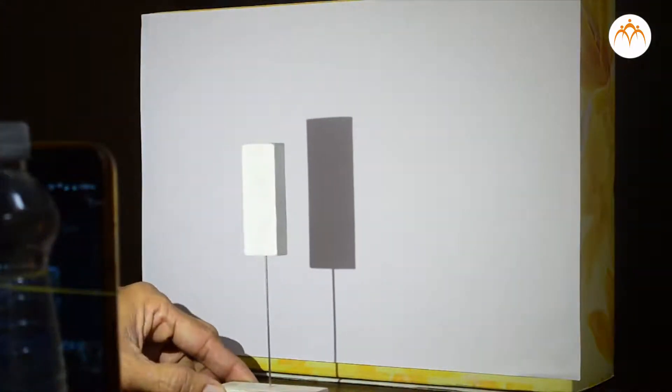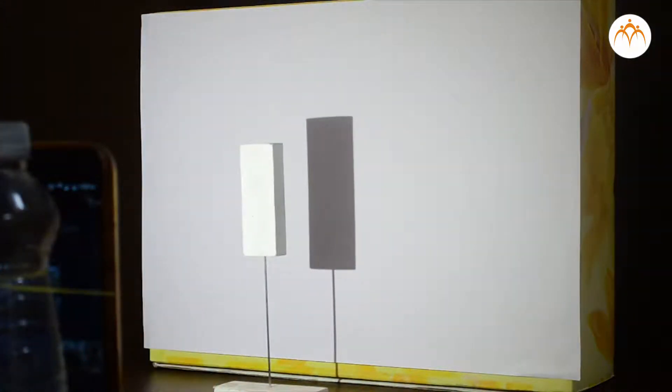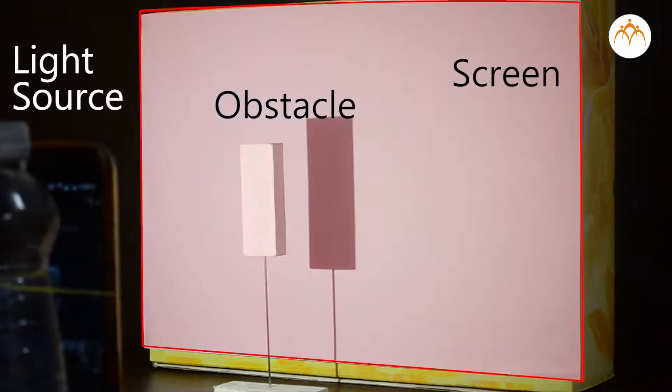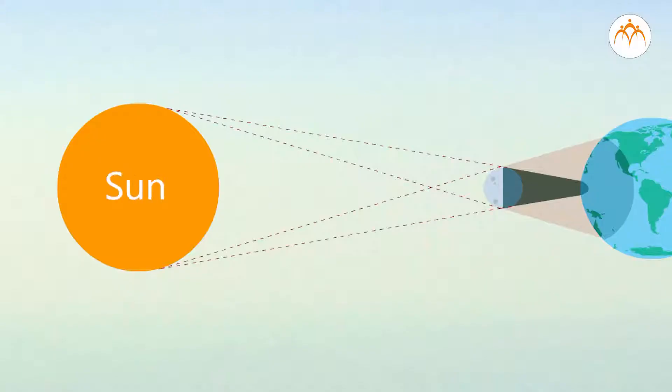Out of three objects involved, one is a light source, one is an obstacle, and one is a screen on which shadow is formed. The sun is a light source. When the moon is an obstacle, we see the solar eclipse.